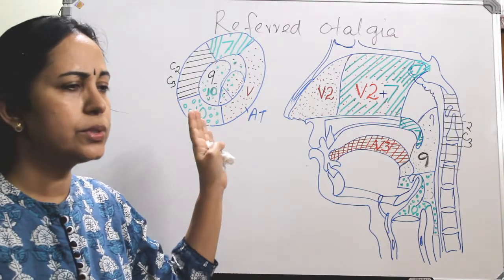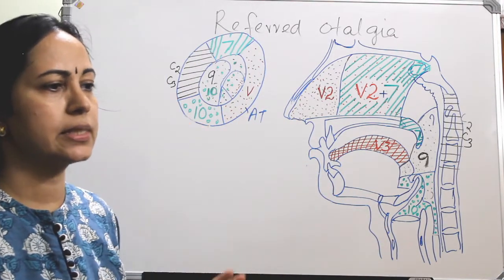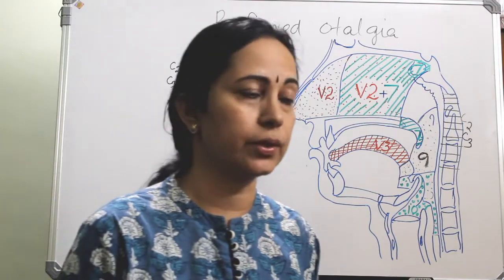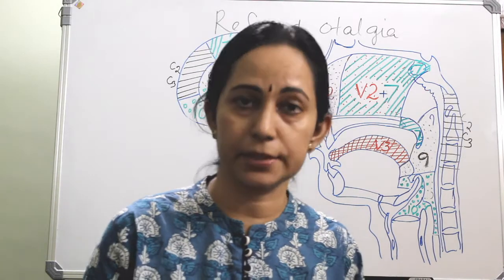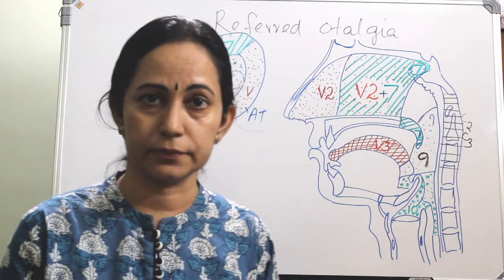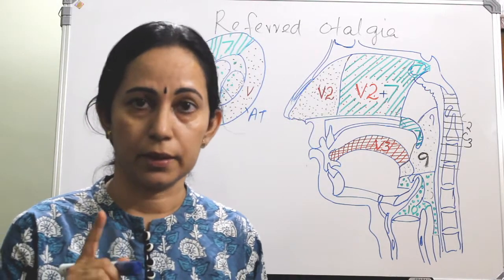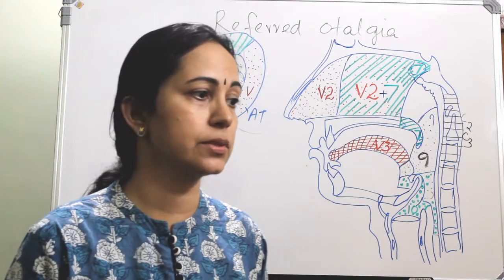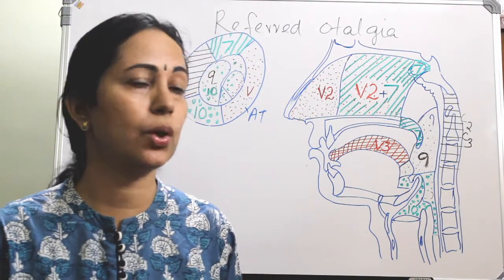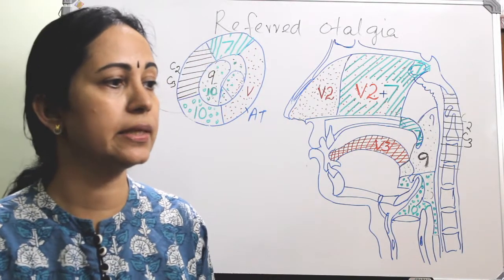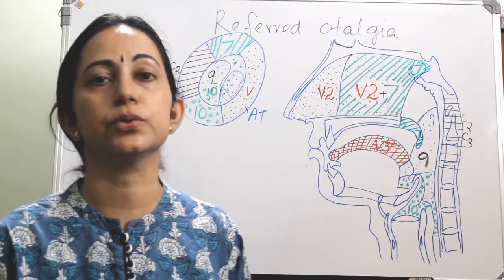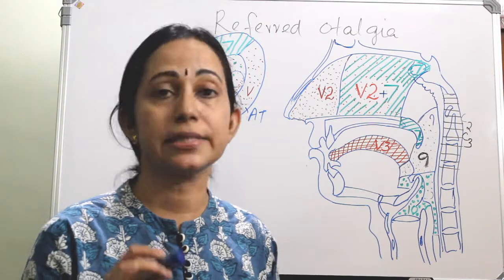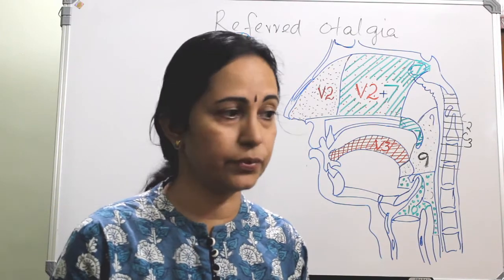The most common sensory nerve supply leading to referred otalgia is the trigeminal — the fifth nerve. Remember, this is usually asked in MCQs. The most common sensory nerve pathway leading to referred otalgia is the trigeminal fifth nerve.